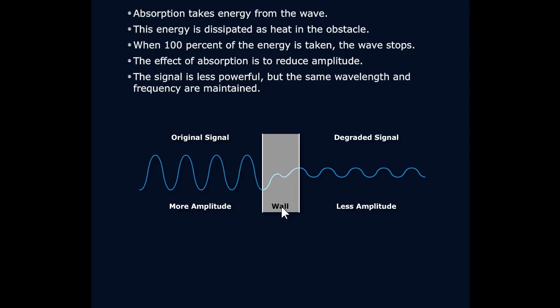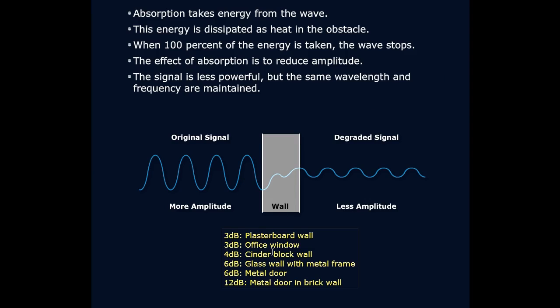If I was really trying to understand this well and be able to even certify in something related to wireless, I would certainly want to have a good idea about what are some of the different rates of absorption of some different materials. This is specifically at the 2.4 gigahertz range. These are ballparks, but we can see you're going to lose about three decibels of energy by going through an office window or a plasterboard wall.